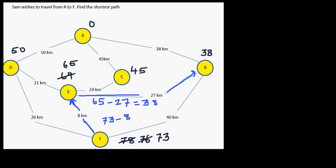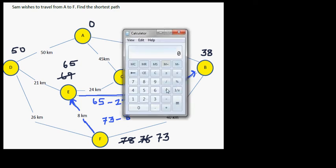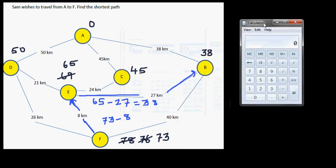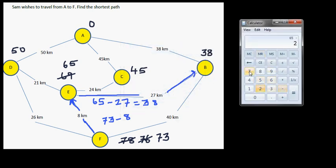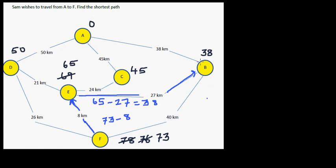So 65 minus 27 is 38. Let me show this on the calculator. It's always good to confirm your answer. 65 minus 27 is 38. And from 38, 38 take away 38 is 0. So this is 38 take away 38 is equal to 0.